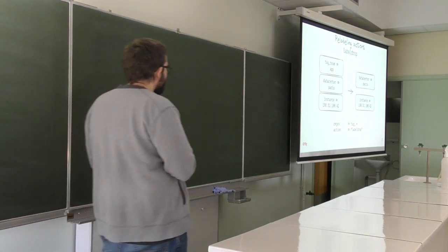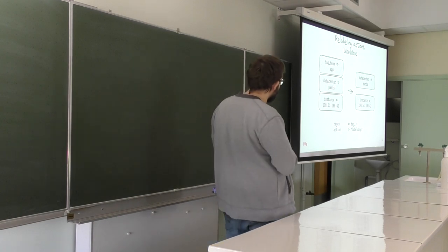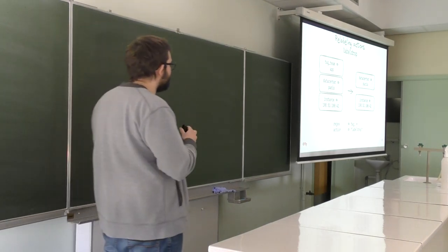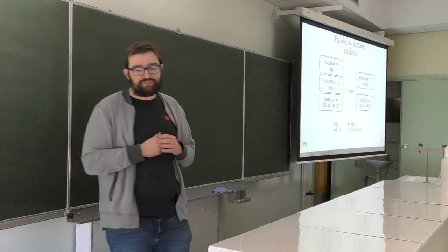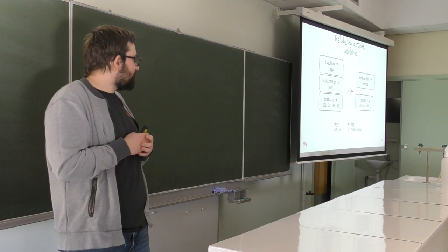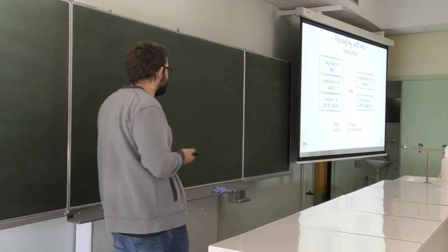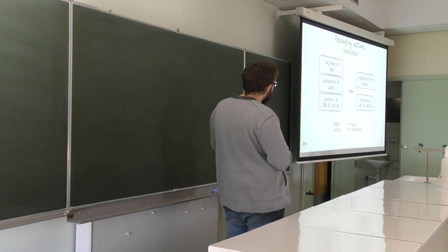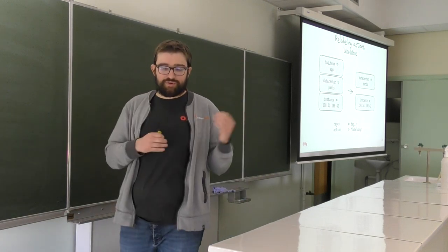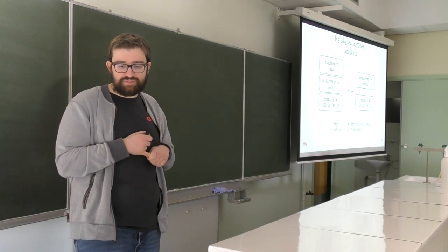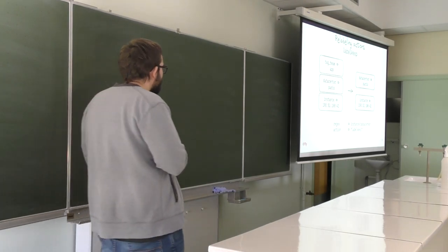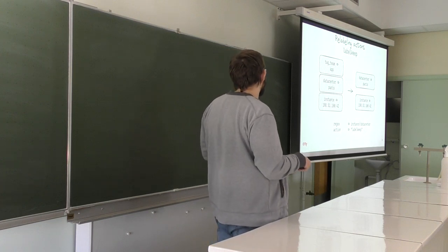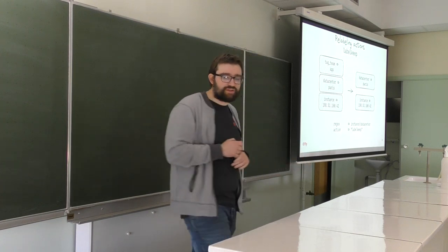'Labeldrop' lets you drop specific labels when you have too many and some aren't useful. It applies a regex to all label names and drops every label name that matches. You need to be careful that you end up with only one output per metric in the metric relabeling area. The opposite is 'labelkeep' — you specify which labels to keep, for example keeping only instance and data center, which means the tag_team label would be dropped.